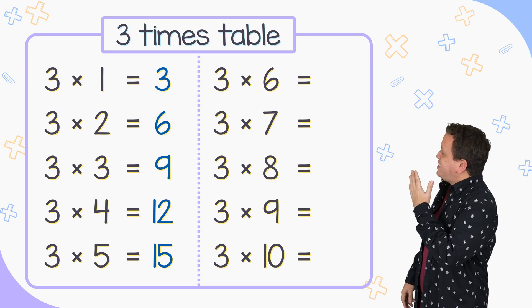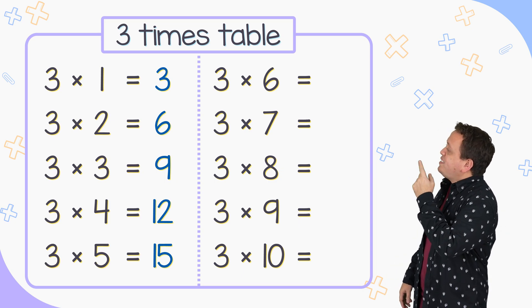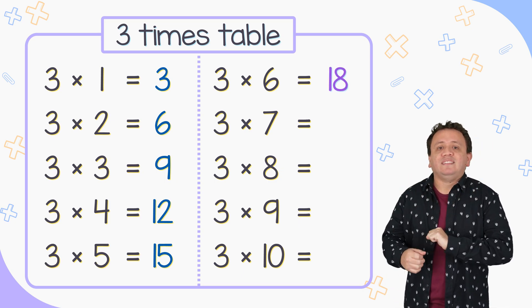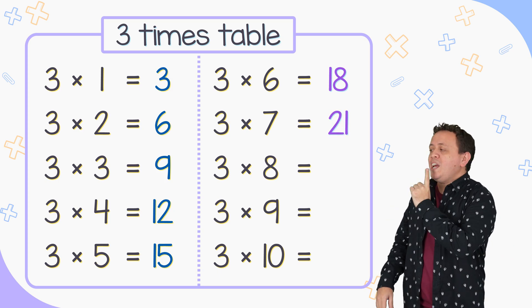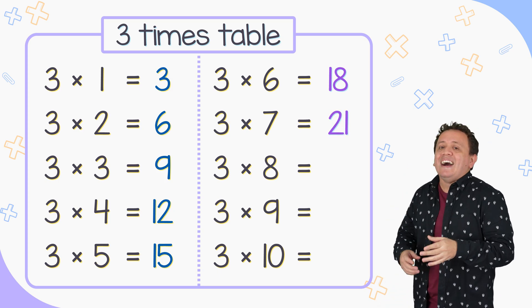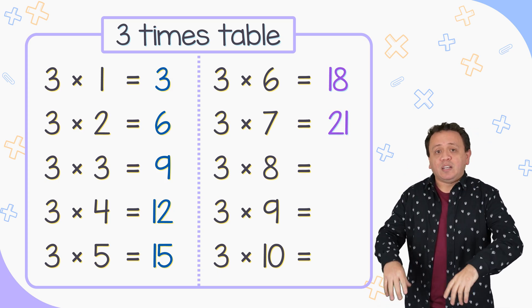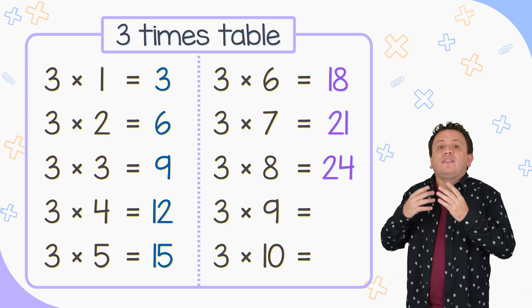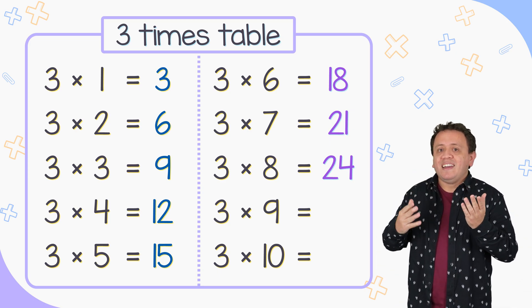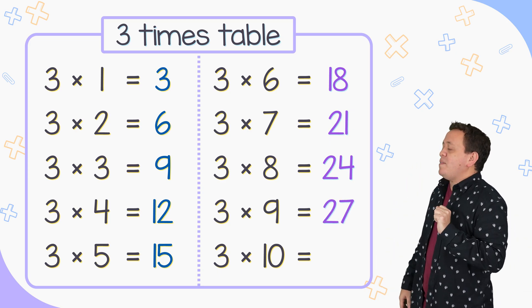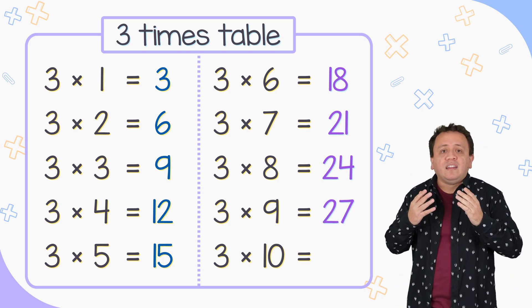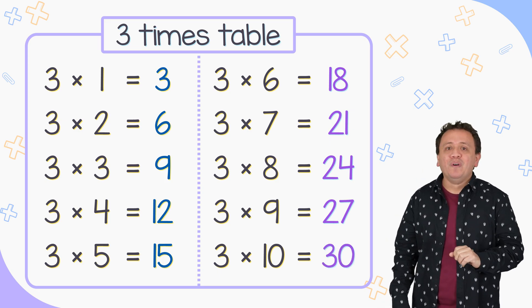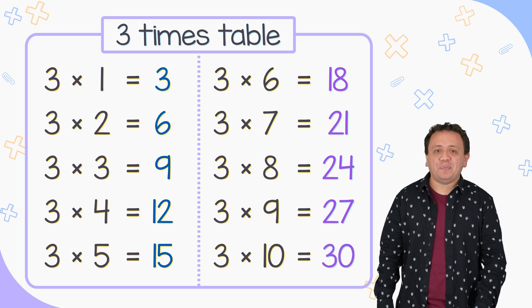3 times 6 equals 18. 3 times 7 is equal to 21. And 3 times 8 is equal to 24. 3 times 9 equals 27. And 3 times 10 equals 30. We finish with this table.